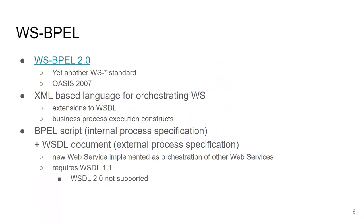BPEL is a web standard published by OASIS; the last version 2.0 is from 2007. Similar to other W3C style web services, the specifications were finalized about 15 years ago and didn't evolve much after that. BPEL is actually used in enterprise environments. Since it's a W3C style technology, it is based on XML and WSDL — specifically WSDL 1.1, as WSDL 2.0 is not supported by BPEL.